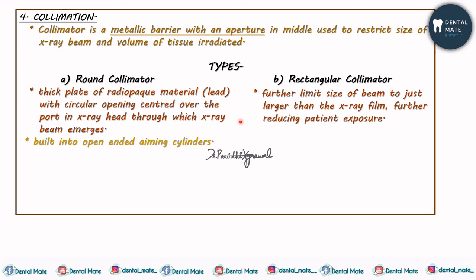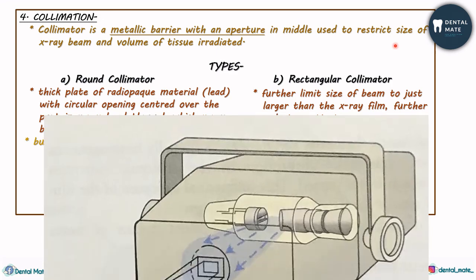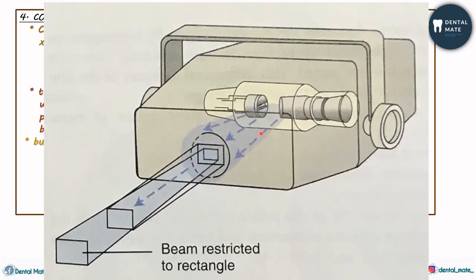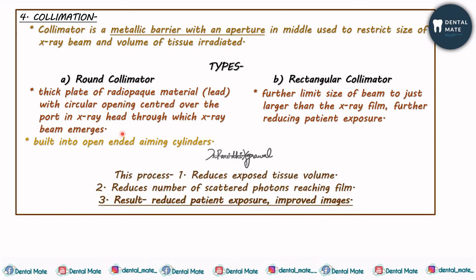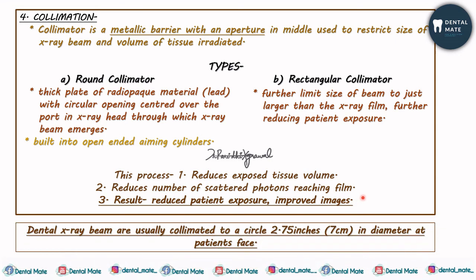With the rectangular collimator, the beam is restricted to a rectangle. Collimation reduces the exposed tissue volume and reduces the number of scattered photons that reach the film, because photons pass through the collimator aperture. The result is reduced patient exposure and improved image quality. Dental x-ray beams are usually collimated to a circle of 2.75 inches — approximately 7 cm — in diameter at the patient's face.